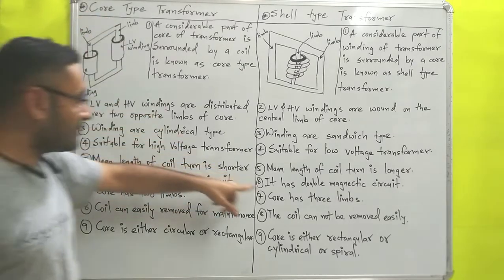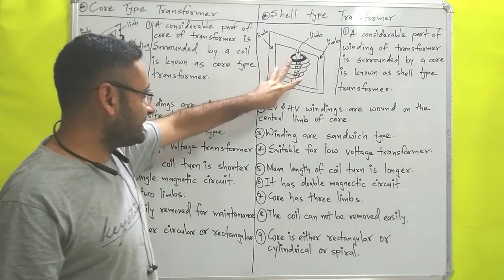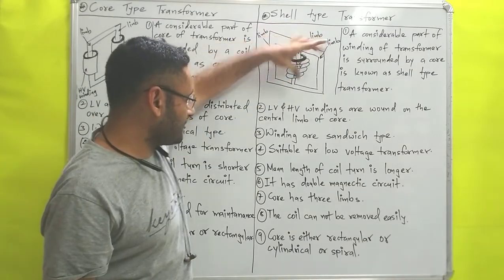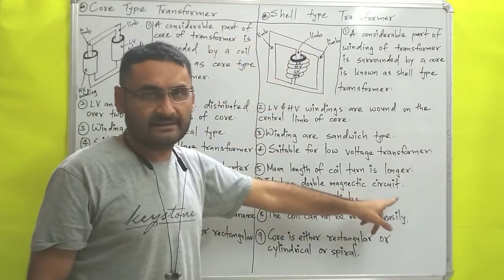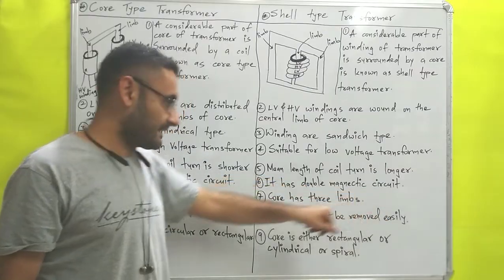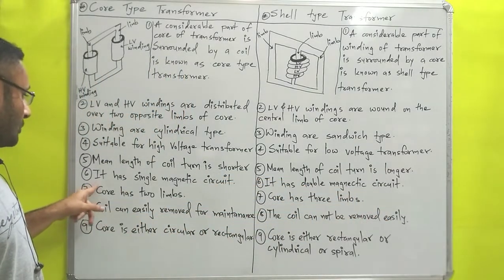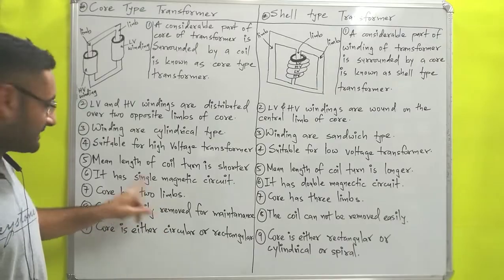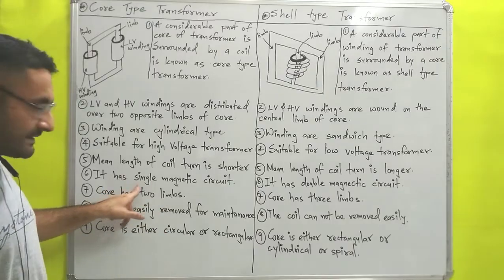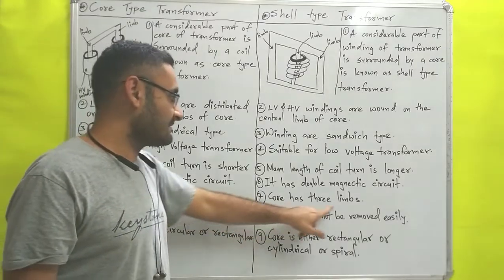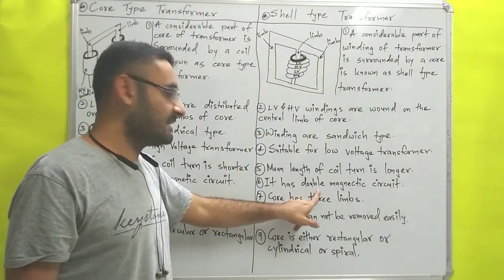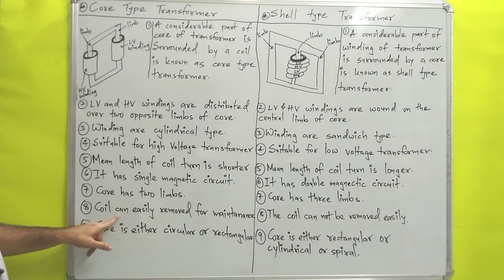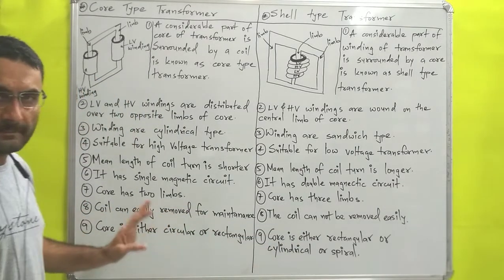Next, the core type has a single magnetic circuit because it has two limbs — so there is one magnetic circuit. The shell type has a double magnetic circuit, because the core has three limbs — one on each side — giving two magnetic circuits. In summary: two limbs means a single magnetic circuit, and three limbs means a double magnetic circuit.